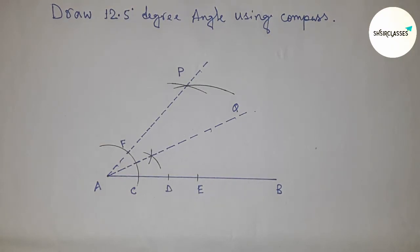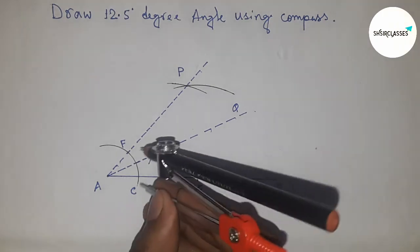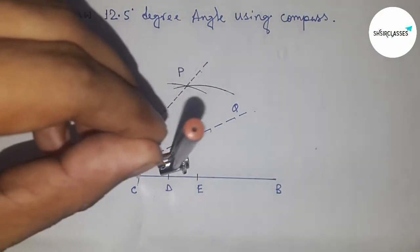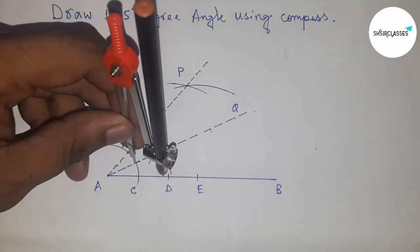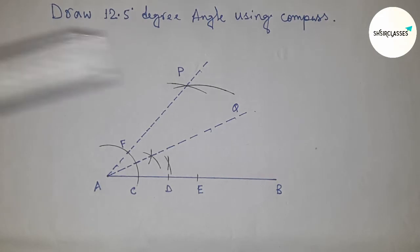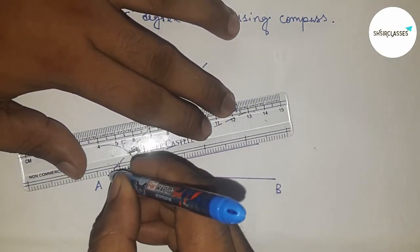Next, to bisect angle QAB, take any length and draw an arc here. With the same length, put the compass here and cut the arc in this way. Next, join this.